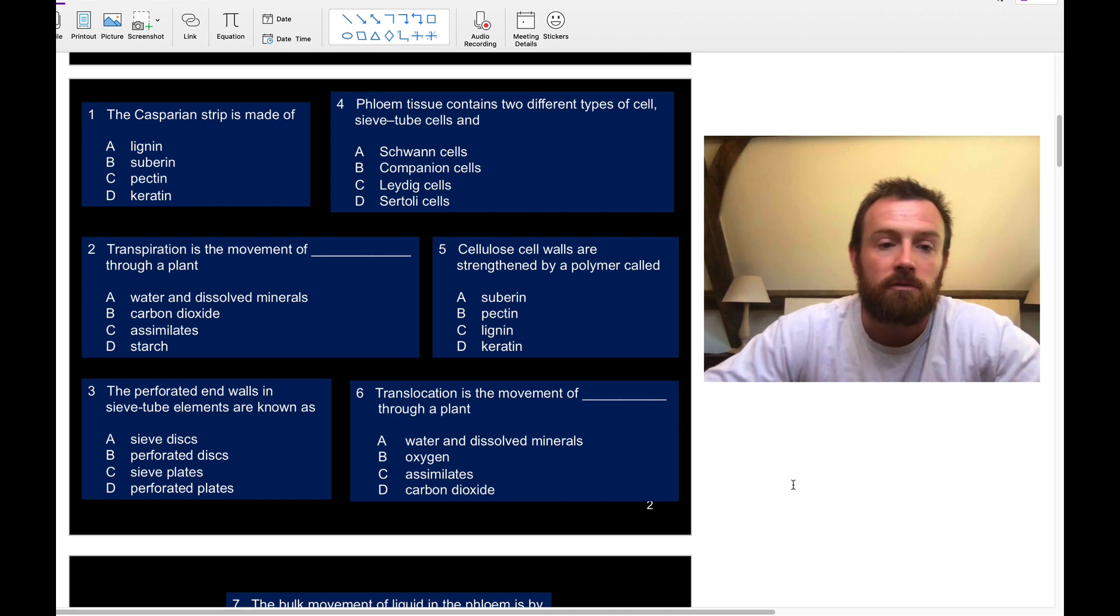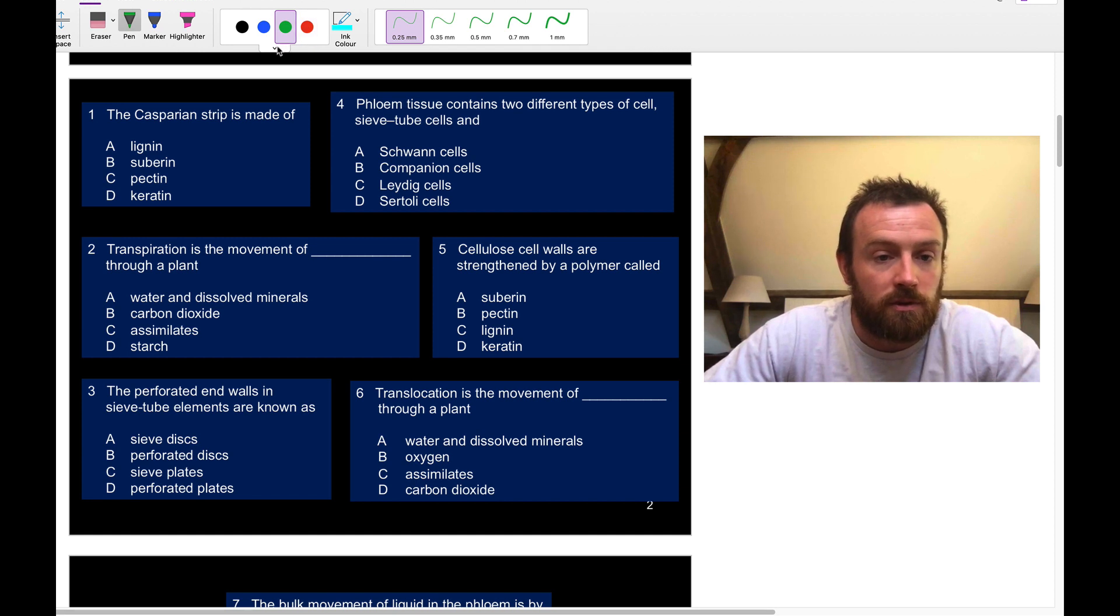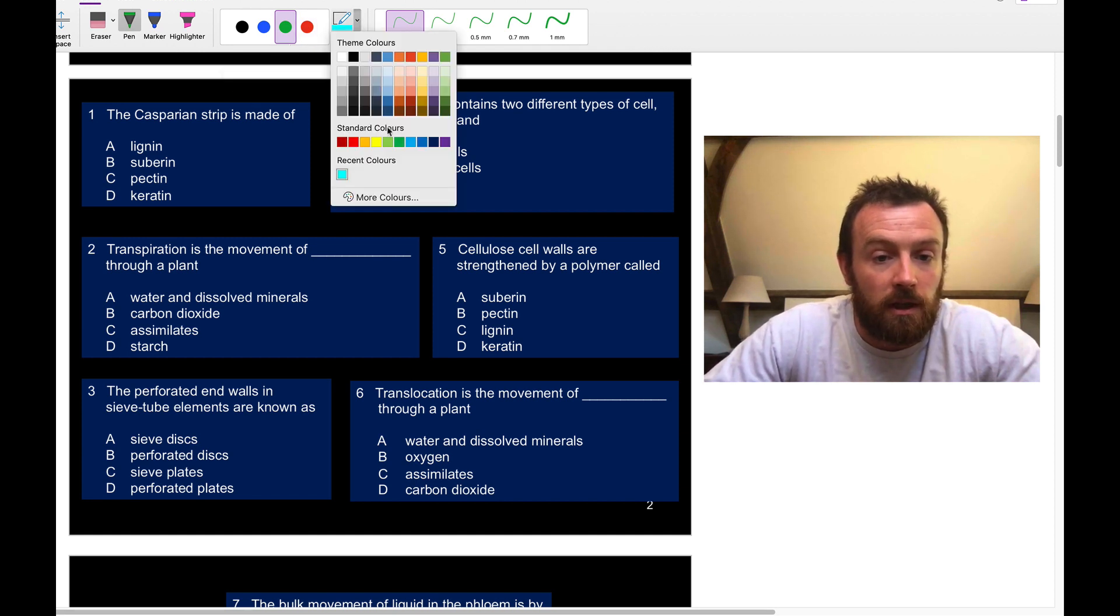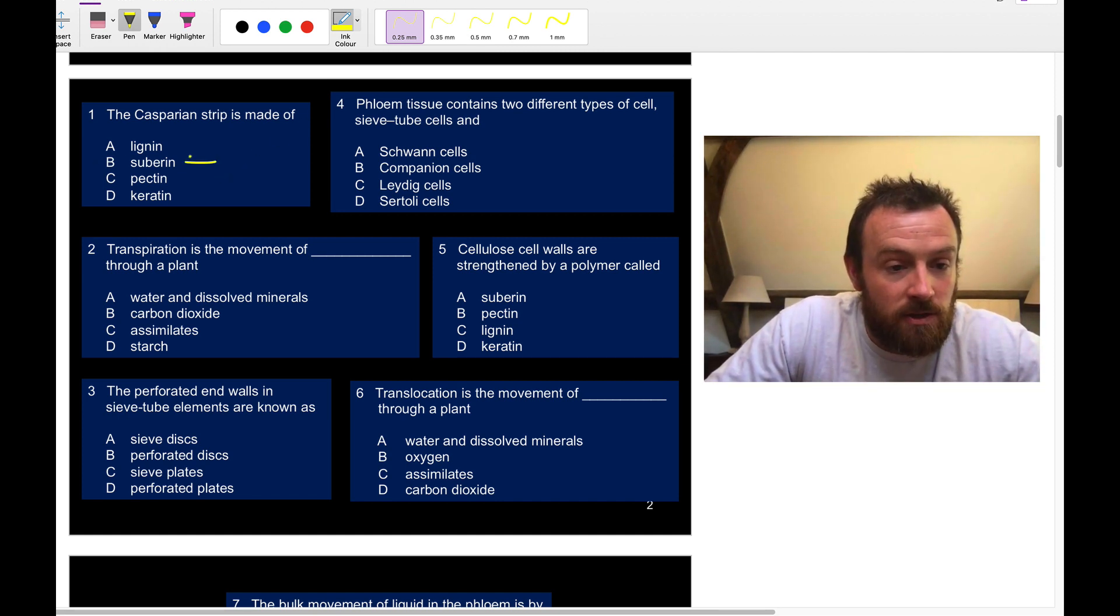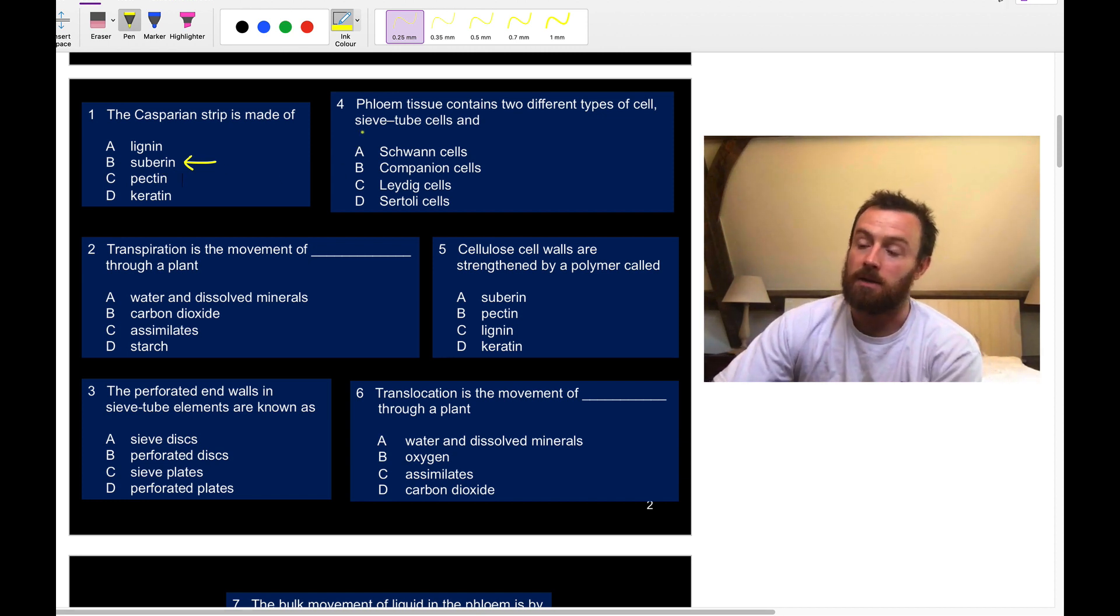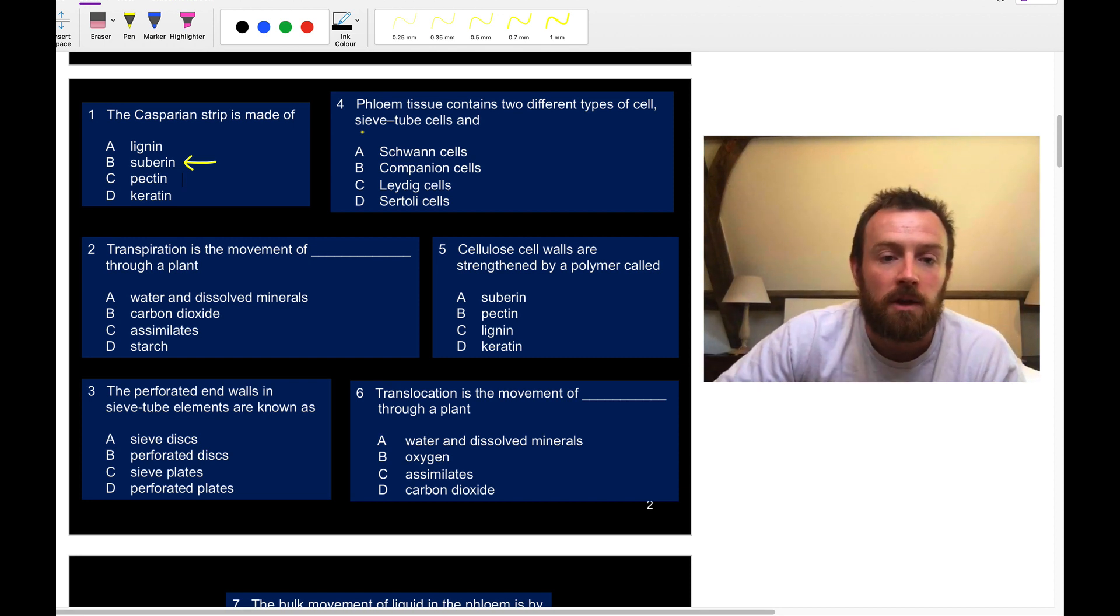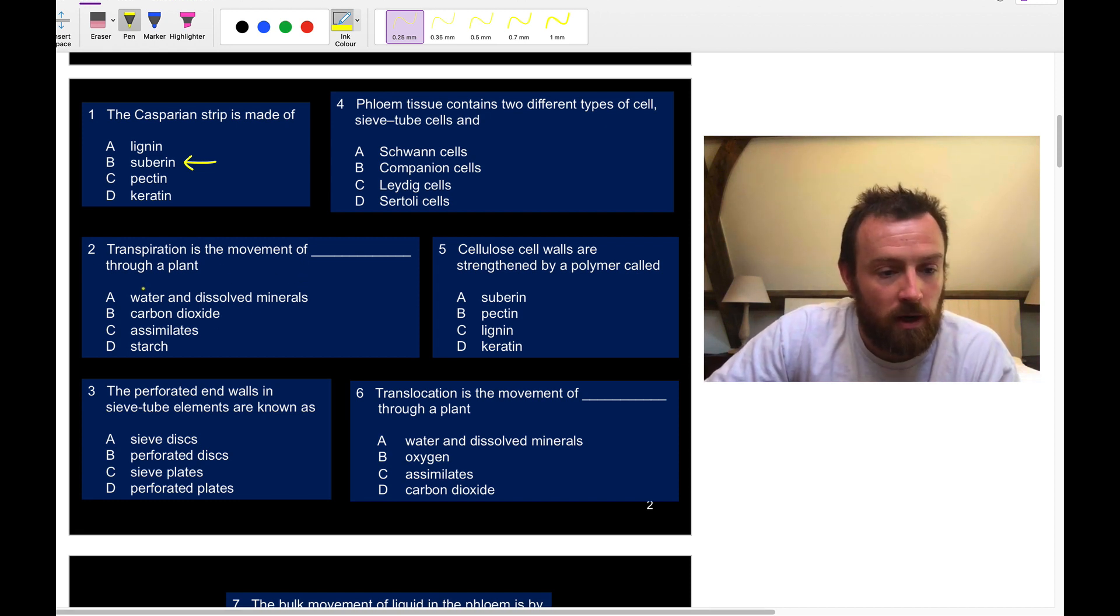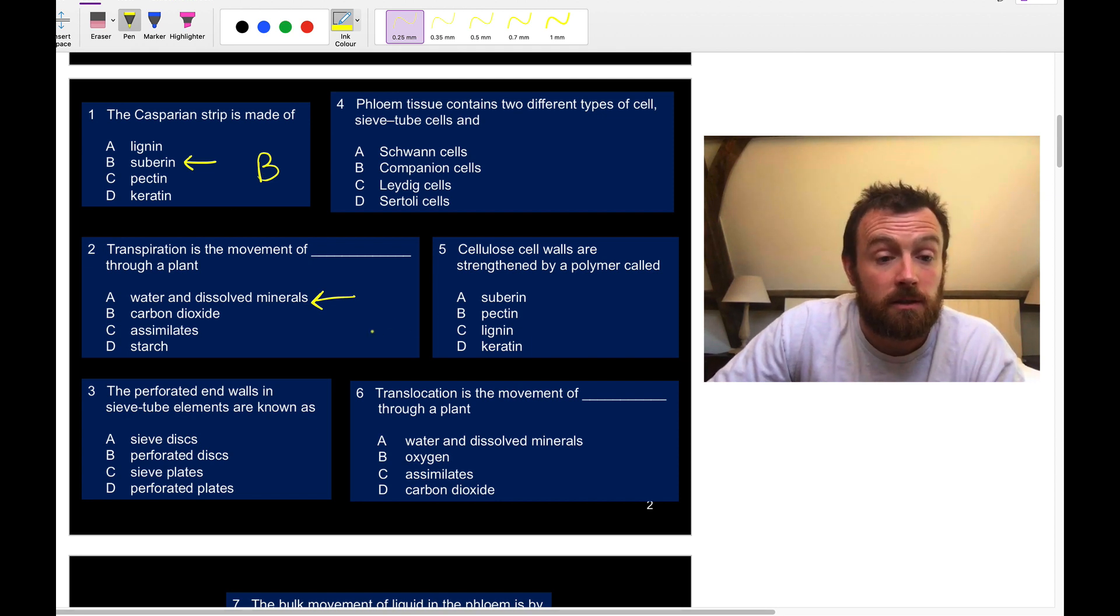Question one: the Casparian strip, remember that's in the endodermis, and that is suberin. Suberin kind of wraps around those cells of the endodermis. The reason is it blocks the apoplast pathway. Transpiration is the movement of water and dissolved minerals through a plant. The perforated end walls in the sieve tube elements are known as sieve plates.